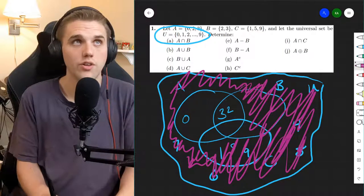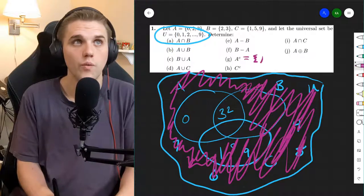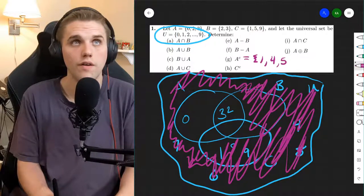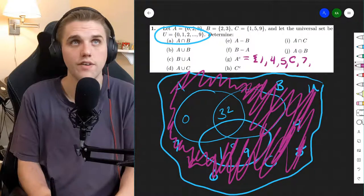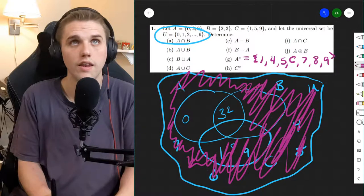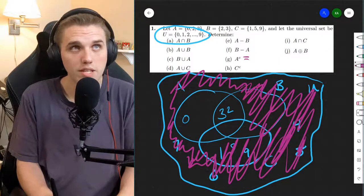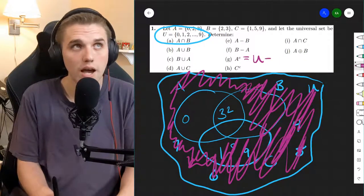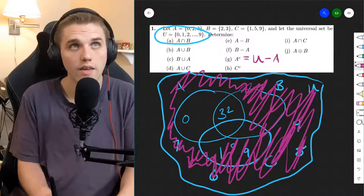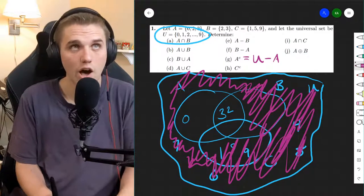So that includes 1, 4, 5, 6, 7, 8, and 9. So that is the complement of A. So another way of thinking about this is U minus A. That's what A complement is.